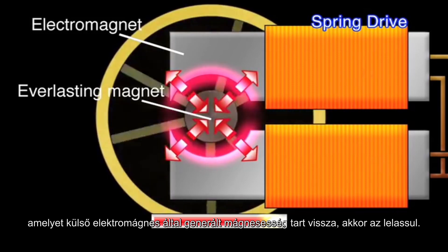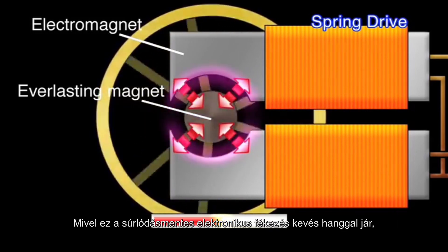When a rotor attached with a permanent magnet rotates, it is pulled by magnetism generated by the outer electronic magnet and becomes braked. As this friction-free electronic braking produces little sound, the overall effect is a quiet one.